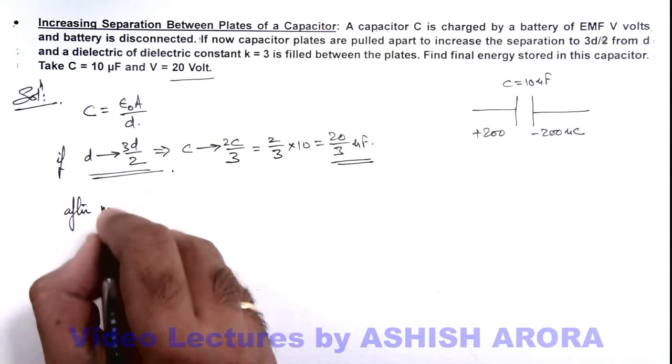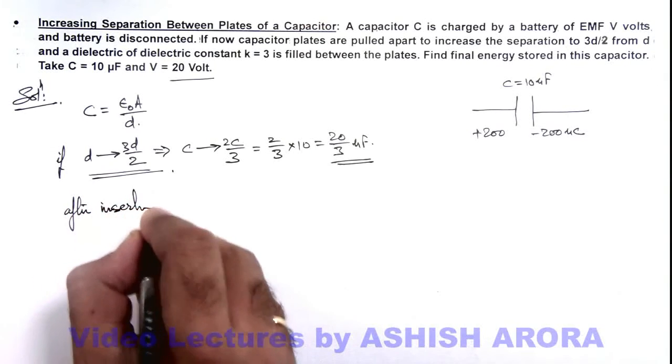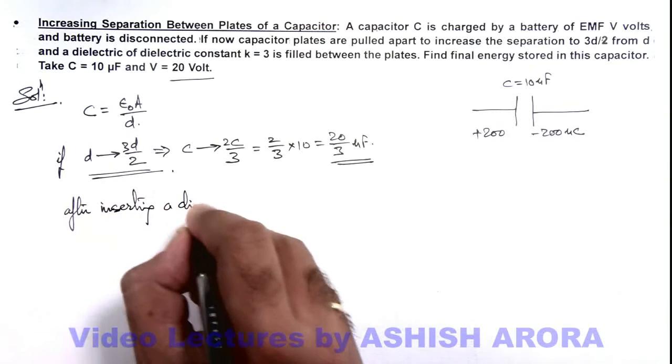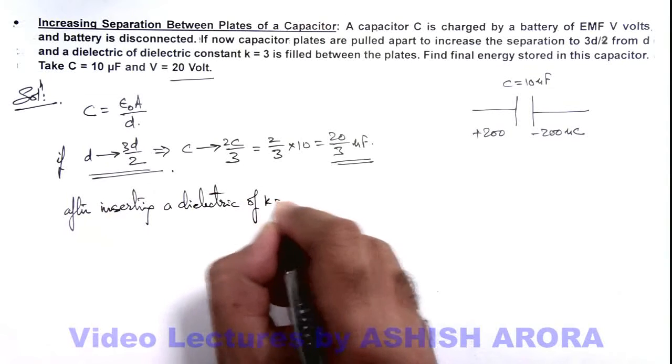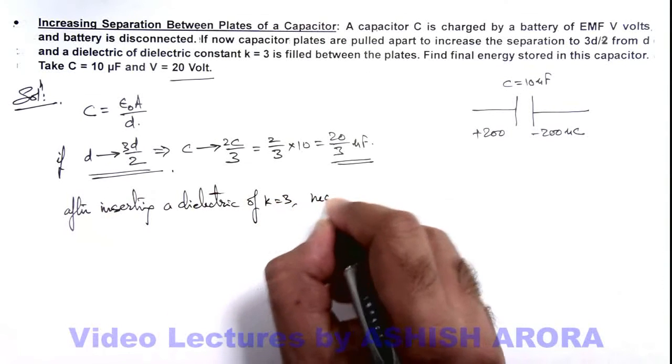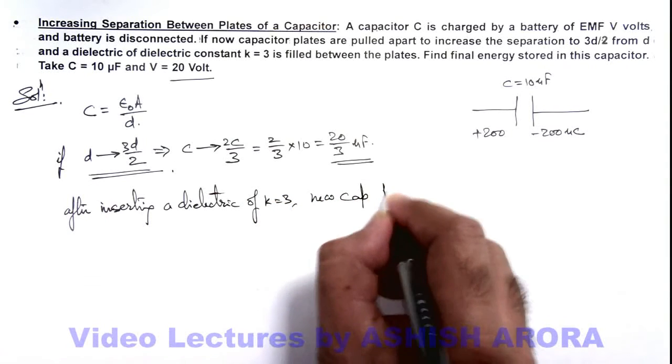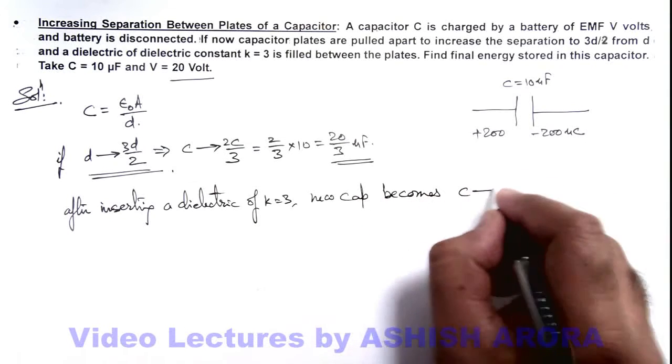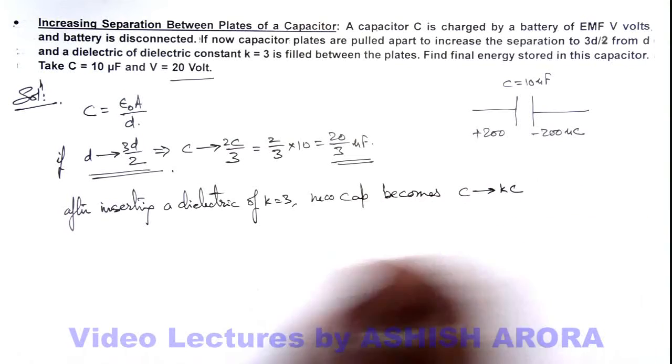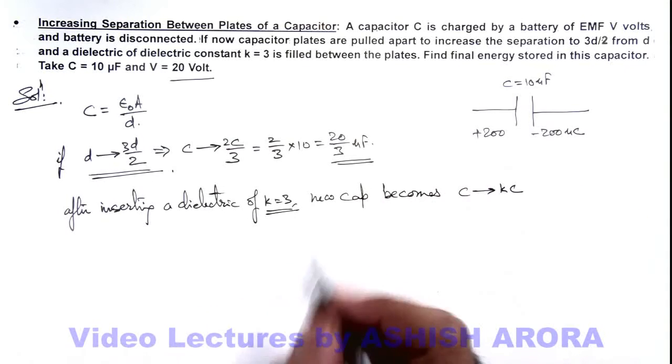And after inserting a dielectric of k equal to 3, new capacitance becomes - we know that the value of C changes to kC on filling with the dielectric of constant k.